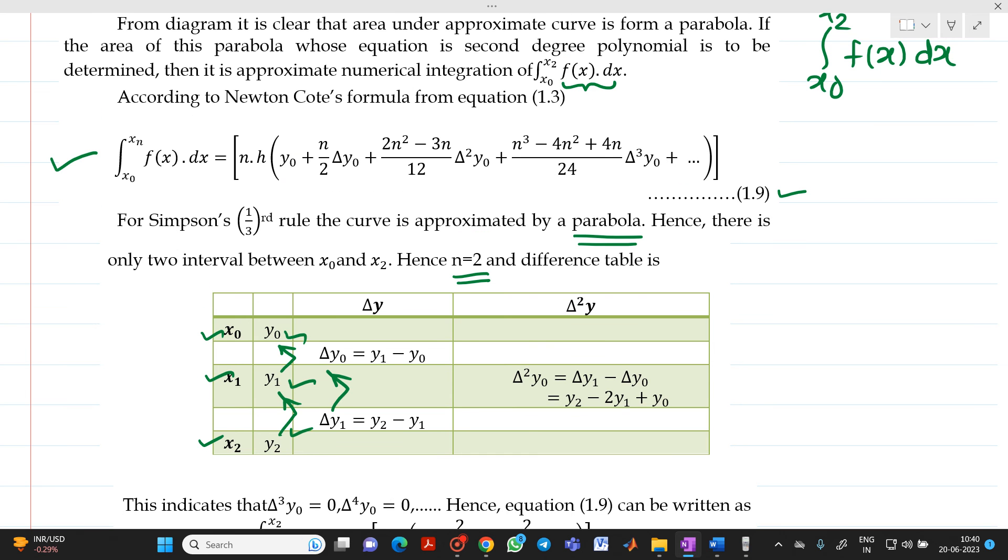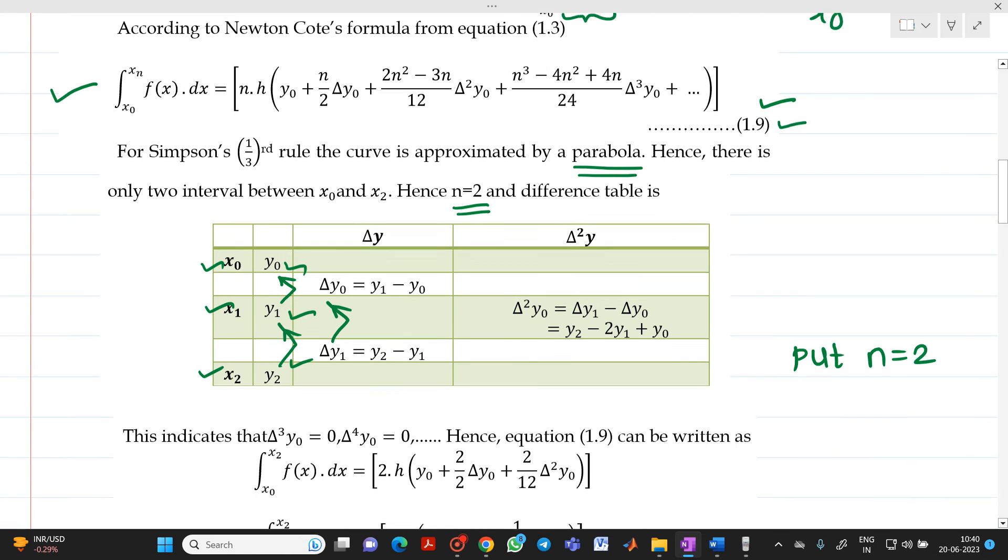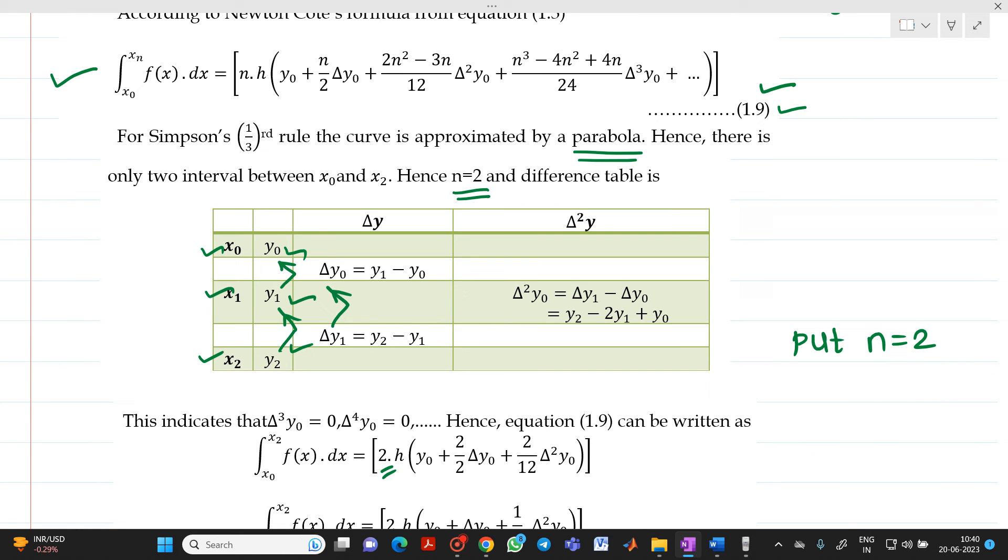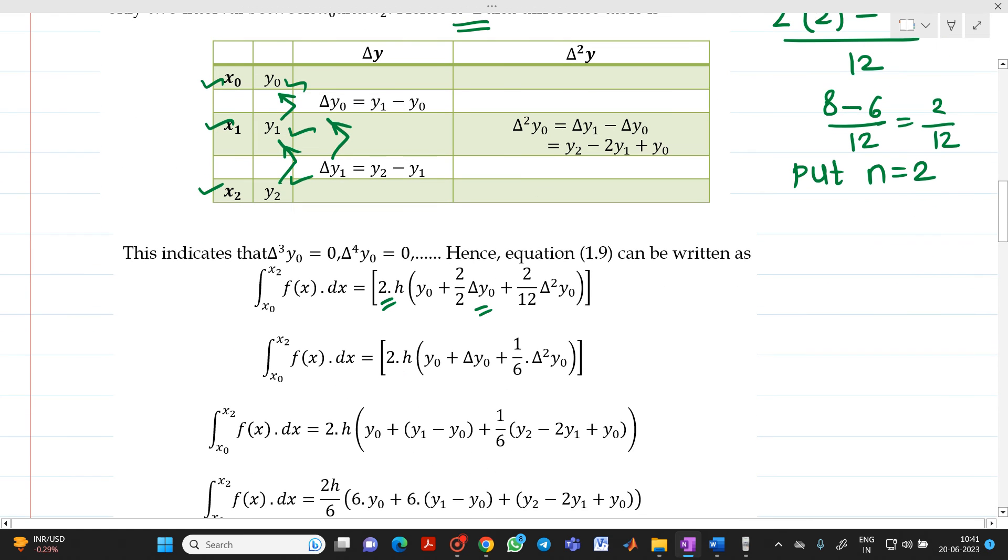So, here, what to do? In this equation 1.9, you have to put n equal to 2. So, what you will get? Here, you will get it as 2. n/2, so here will be 2/2. And if you put 2 here, 2 into bracket, 2 square minus 3 into 2 upon 12. 2 square is 4. So, it will be 8 minus 6 divided by 12, which will be equal to 2/12 or you can write it as 1/6. So, we will get this term. We will get this equation.